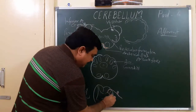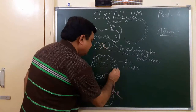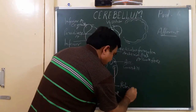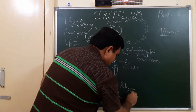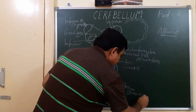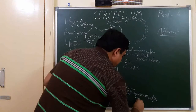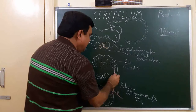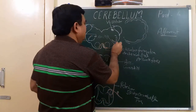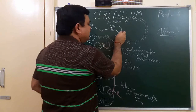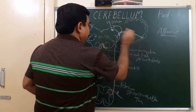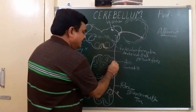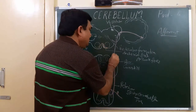This is the posterior spinal cerebellar tract. These fibers are posterior spinal cerebellar tract fibers. And the fibers here are accessory cuneate fibers — these are cuneocerebral fibers.